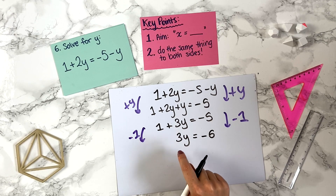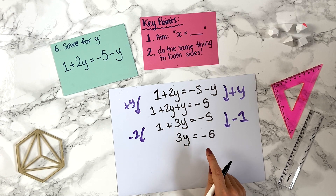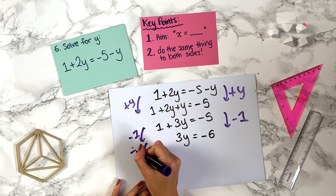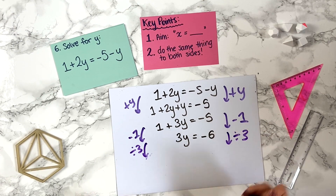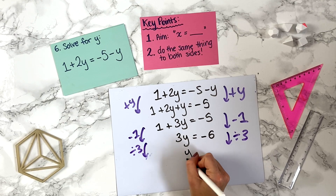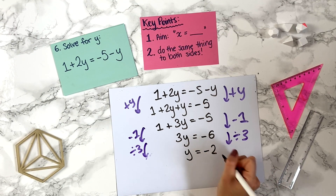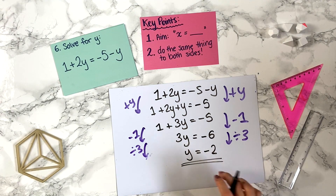We have 3 times y, so to undo the multiplication we divide by 3 — the opposite of times is divide. We divide both sides by 3: 3y divided by 3 is y, and minus 6 divided by 3 is minus 2. So y equals minus 2. You can substitute that back in to verify you get the right answer.